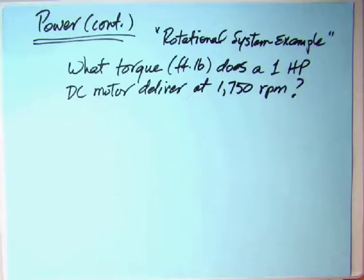To conclude this instructional companion, the MERM has a linear system example. I think what's appropriate is a rotational system example, and this is a very important one for an engineer, not only for the PE but for work. I did this calculation at least once a day for I don't know how many years. What torque in foot-pound does a one-horsepower DC motor deliver at 1750 RPM?